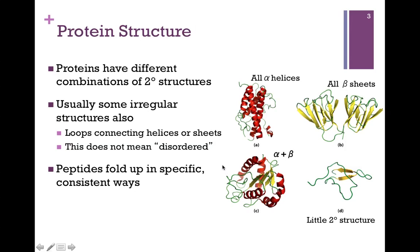These loops are not disordered — they're simply irregular. That is to say, they don't fit into a pattern like an alpha helix or a beta sheet. But they are part of the regular ordered structure of the protein, because the protein always folds up in the same way. They fold in very specific, very consistent ways, and that means the fold is spontaneous.